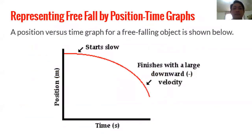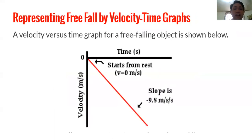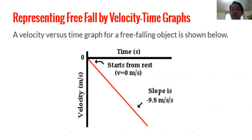A position-time graph of freefall starts low and finishes with a large downward negative velocity. A velocity-time graph of freefall shows the graph starting from rest with an initial velocity of 0 m/s, and the slope is −9.8 m/s² because it goes downward.